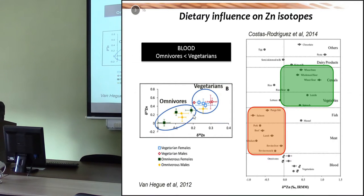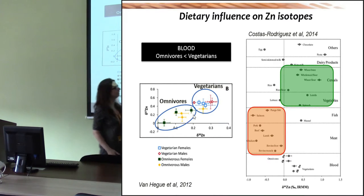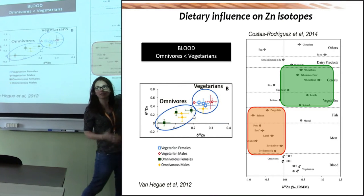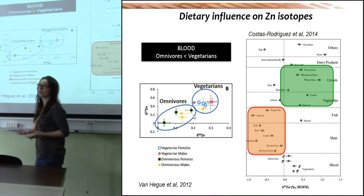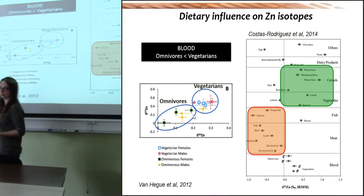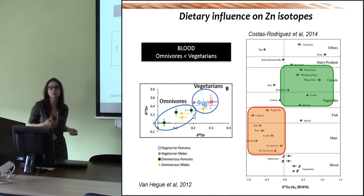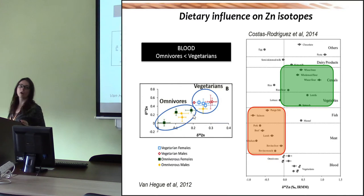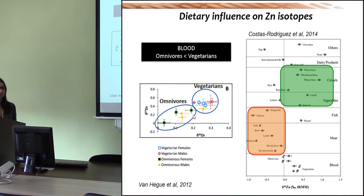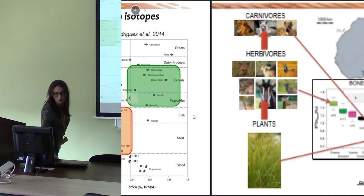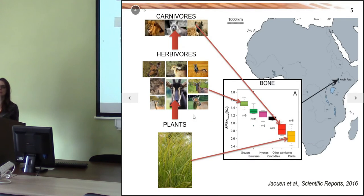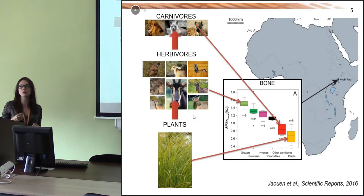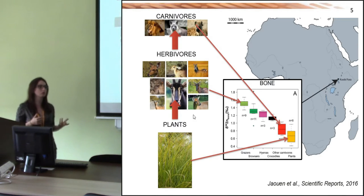In that study they also analyzed plant and animal products and demonstrated that plants indeed have higher zinc isotope composition compared to animal products, which is consistent with the fact that omnivores who consume meat have lower zinc isotope composition in their blood.